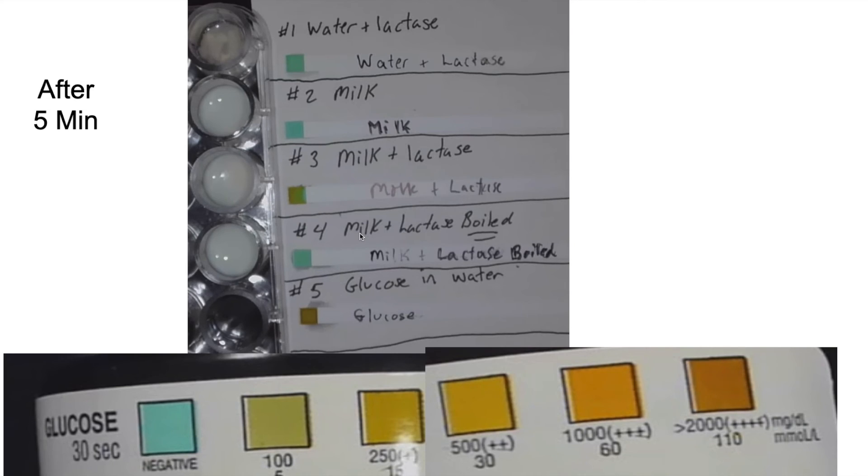This right here is the milk and the lactase, same as number three, except it is boiled. It is negative as if nothing happened. And that's right, guys. Nothing did happen. So boiling is 100 degrees Celsius and lactase is an enzyme and enzymes are made of protein.